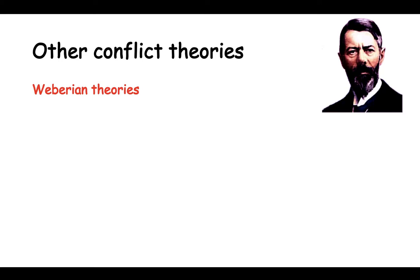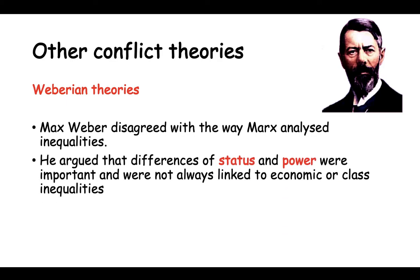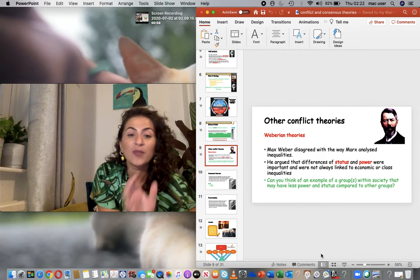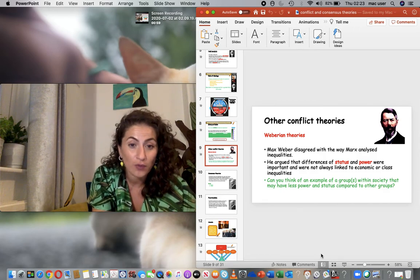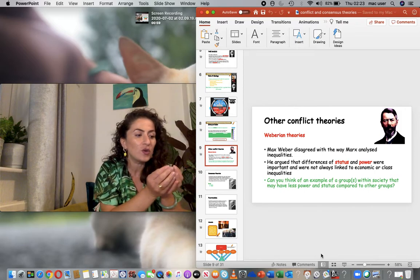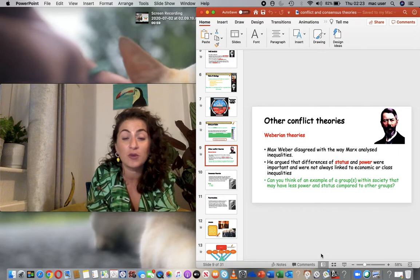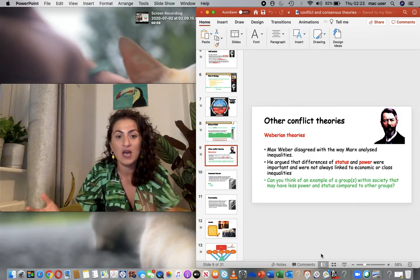When it comes to other conflict theories, we look at Weberian theory. Max Weber disagreed with the way Marx analyzed inequality — he agreed inequalities exist, but argued that differences of status and power were important and were not always linked to economic or class inequalities. Marx looks at society from a macro level — how society shapes the individual. Weberian studies look at how individuals and small communities affect society, as seen in The Protestant Ethic and the Spirit of Capitalism, where a small culture created a big difference in wider society.